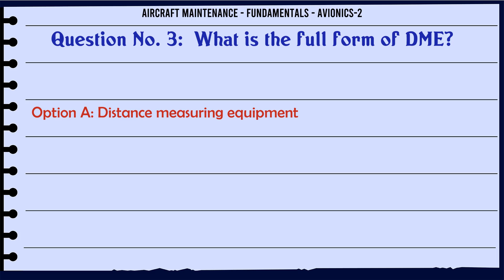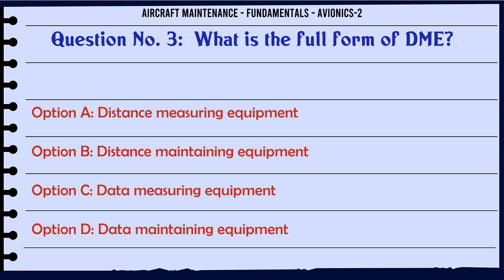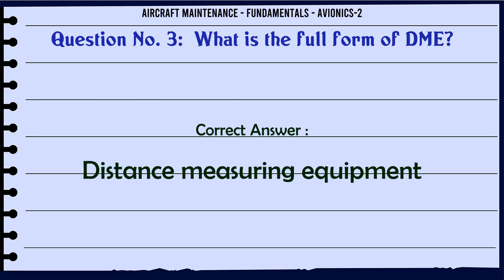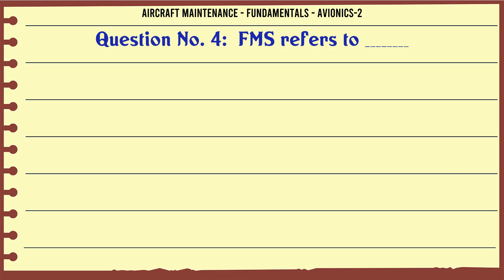What is the full form of DME? A. Distance Measuring Equipment, B. Distance Maintaining Equipment, C. Data Measuring Equipment, D. Data Maintaining Equipment. The correct answer is Distance Measuring Equipment.